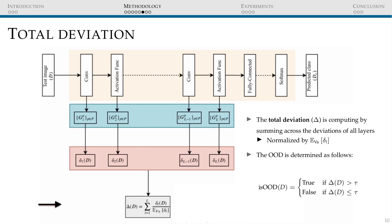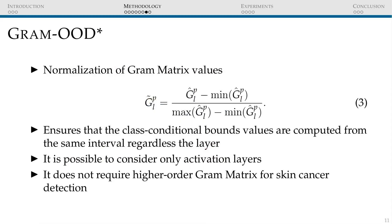Out-of-distribution baselines typically provide the true negative rate at a true positive rate of 95%. The extended method presented in this work, Gram-OOD star, introduces a new normalization step into the original method that essentially normalizes the Gram matrix at each layer. It is important to ensure that the layer-wise deviations are computed relative to the same interval, regardless of the layer. As a result, we can consider only the activation layers, reducing by a factor of two the number of assessed layers. Furthermore, for skin cancer, we found that we do not need to use the higher-order Gram matrices, which again significantly reduces the computational time.